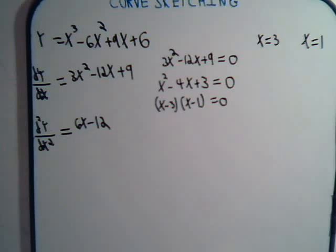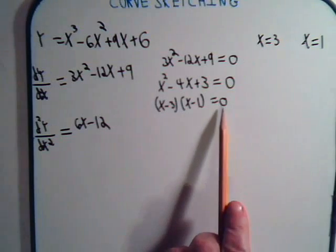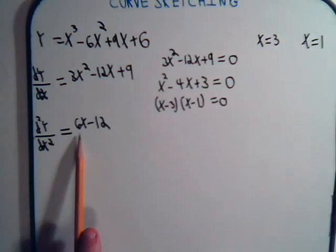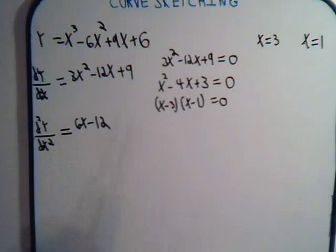Now, notice, x equals 2 is not a critical value. It doesn't make the first derivative 0, but it does make the second derivative 0. So, at x equals 2 might qualify for an inflection point. We'll examine that in just a couple of minutes.